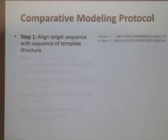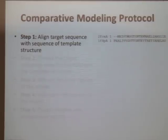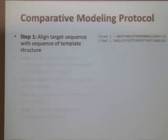This is the general protocol. You first start with an alignment between your target and your template structure. This is a very important step because it determines what amino acids of your target will be threaded onto your template. There are many sequence alignment tools — BLAST, ClustalW, and we work on one in our lab called BCL-align. There are a lot of different sequence alignment methods.